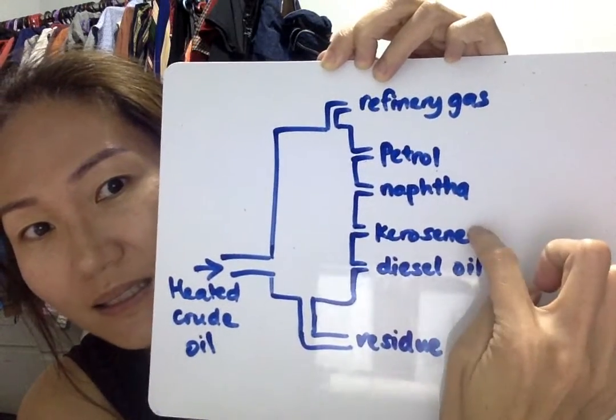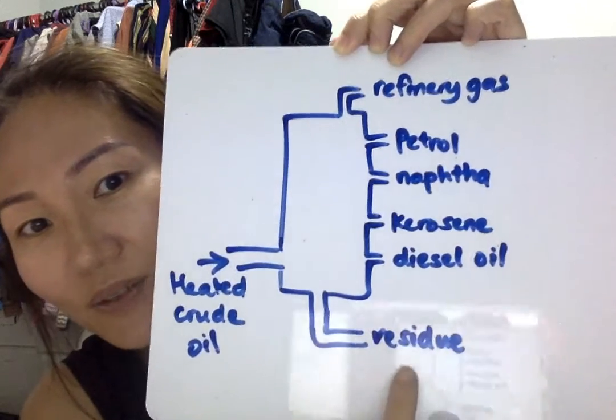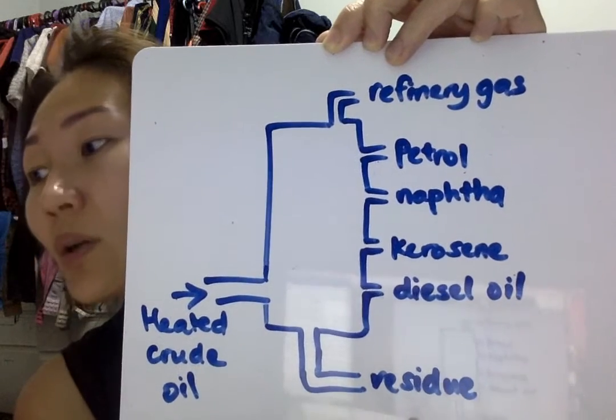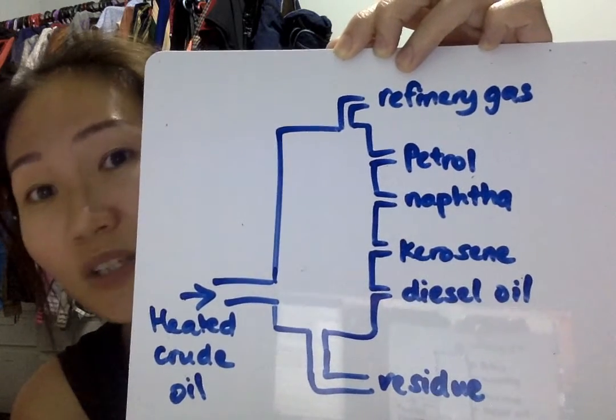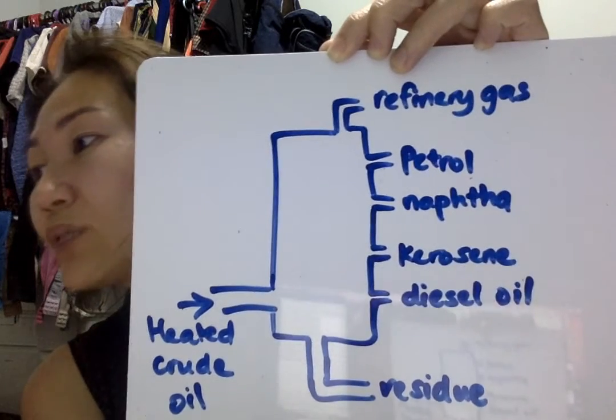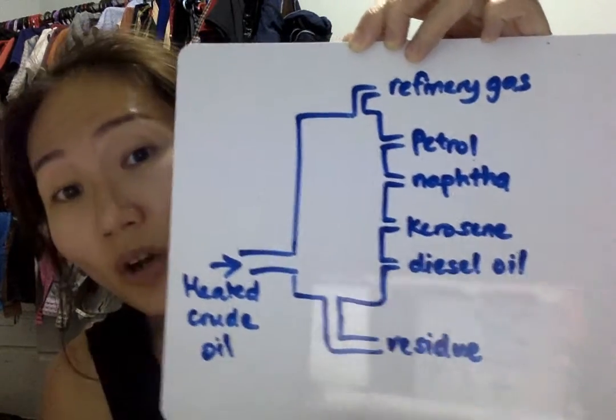This is A, this is B, this is C, this is D, this is E, and this is F. So this diagram shows us the answers to question A. Now question B: explain how the different fractions are separated from crude oil.